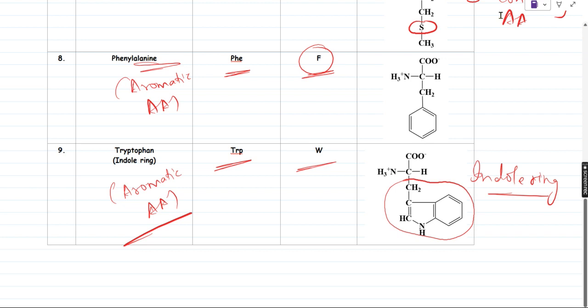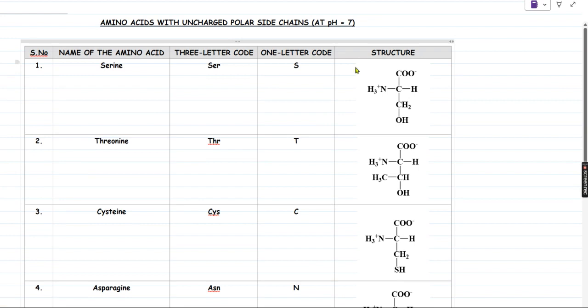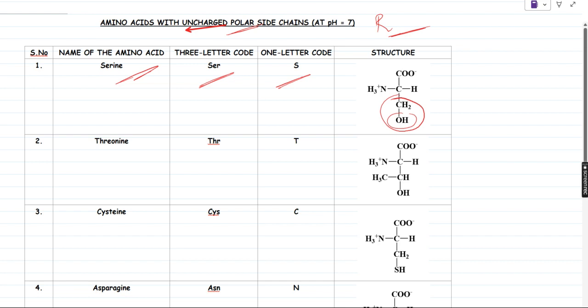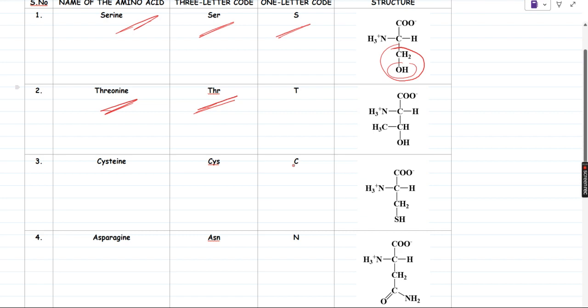Moving on to the next classification: amino acids with uncharged but polar R groups. The first one is serine — three-letter code SER, one-letter code S. Its structure consists of a hydroxyl group: CH2OH. The next one is threonine — three-letter code THR, one-letter code T. Don't get confused between threonine and tryptophan: tryptophan is W, threonine is T. If you see the structure, threonine has an extra methyl group compared to serine. So serine and threonine are both hydroxyl group-containing amino acids, the difference being one extra methyl group in threonine.